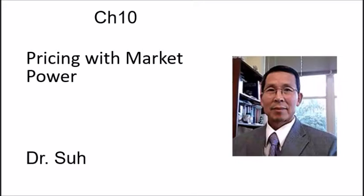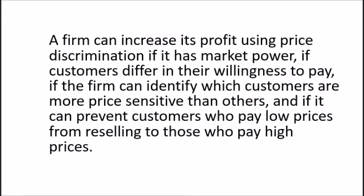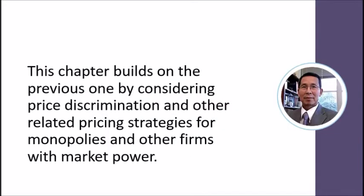Good morning class. Today the class covers chapter 10 of the textbook. The topic is pricing with market power. A firm can increase its profit using price discrimination if it has market power, if customers differ in their willingness to pay, if the firm can identify which customers are more price sensitive than others, and if it can prevent customers who pay low prices from reselling to those who pay high prices.